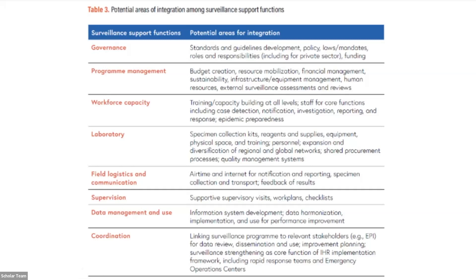I'll just pick out one or two examples. There were a lot of questions yesterday about workforce capacity and how to improve it — that's the third row. Some examples here are training or capacity building at all levels, and staff for core functions including case detection, notification, investigation, reporting, and epidemic preparedness. There were questions about how to increase workforce capacity and how to talk to the Ministry of Health about why it's important, what needs to be done, and what kind of budget would be needed. This table can give you ideas to help support your action plan as you go along.